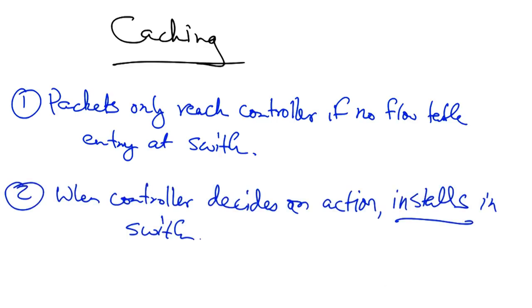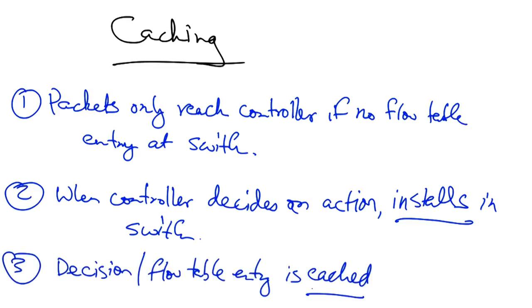So when a controller decides to take an action on a packet, it installs that action as a flow table entry in the switch. And that decision or flow table entry is cached until that flow table entry expires.